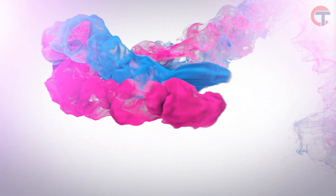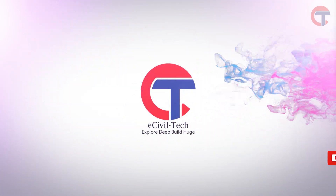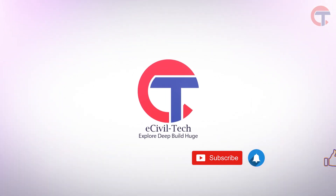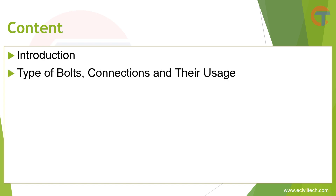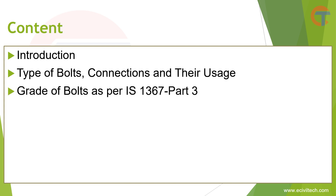Let's check out the content we are going to learn in this video. Introduction: here we will learn about the important parts of the bolts and their function. Type of bolts: here we will learn about the types of bolts and how they are used. Grade of bolts: grade defines the strength of the bolt. We will learn how to read the grade of a bolt and how to check the strength of a bolt using the grade.